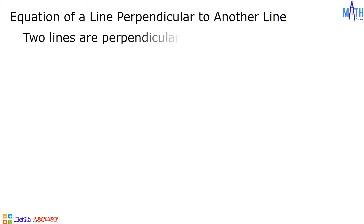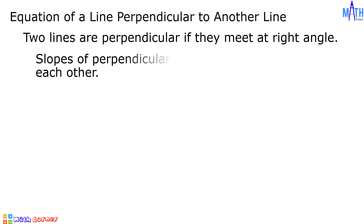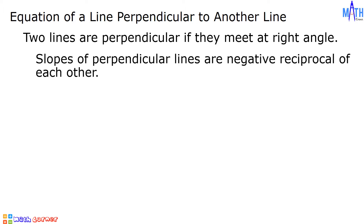Two lines are perpendicular if they meet at a right angle. Slopes of perpendicular lines are negative reciprocals of each other. The product of the slopes is equal to negative 1. For instance, if we have a slope of 1 over 5, its negative reciprocal is equal to negative 5 over 1, which is equal to negative 5. If we have negative 4 over 7, the negative reciprocal is positive 7 over 4.